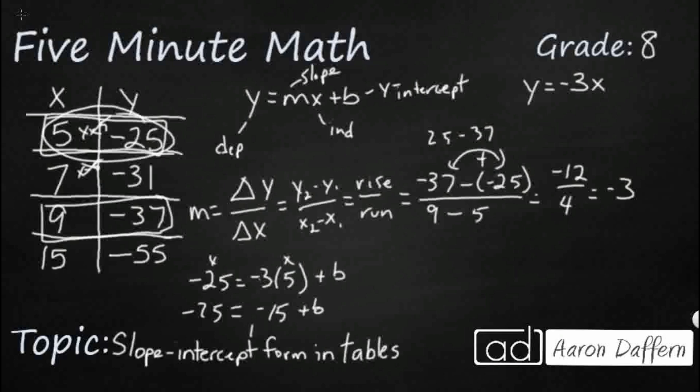So plus b. And now I'm just going to add 15 to both sides. All right. And guess what I'm going to get? Negative 25 plus 15, that's going to be negative 10. So b is going to equal negative 10. So it looks like my y-intercept is negative 10.